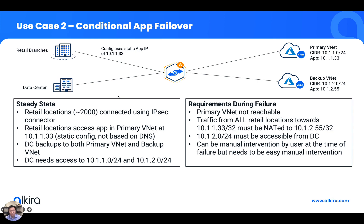From a NAT perspective, one option is to apply a policy to all of the retail branches saying: for all traffic destined to 10.1.1.33, NAT it to the backup app IP of 10.1.2.55. That policy would have to be applied to 2,000 retail locations. Another method is to apply a policy to the backup VNet where we NAT 10.1.2.55 to 10.1.1.33 and enable bidirectional translation. That's probably an easier option than applying the policy to all of the retail branches.